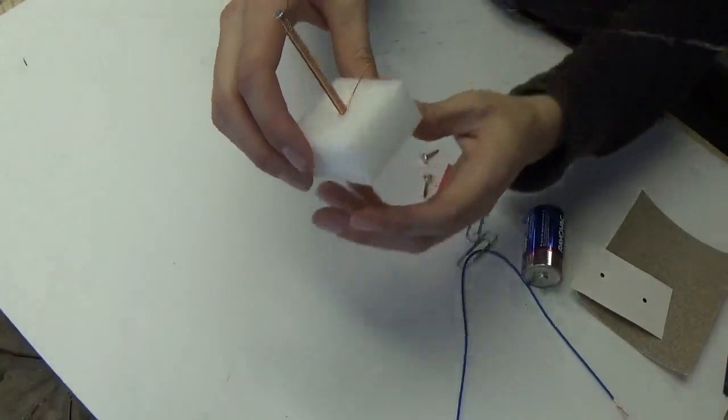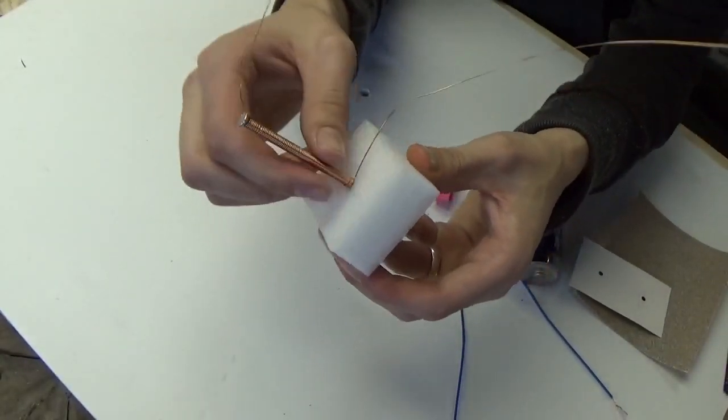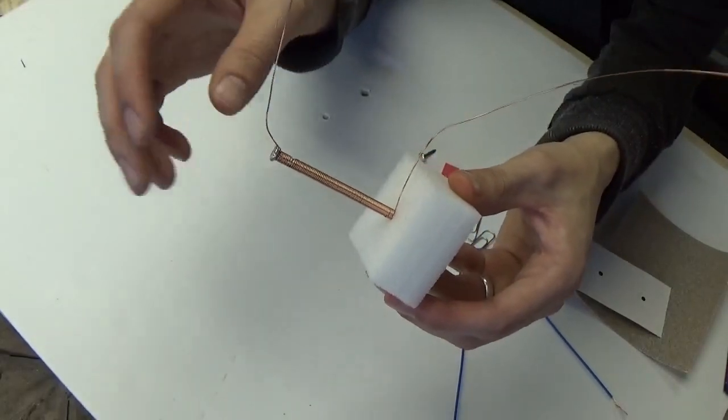First you want to take the nail and take the wire and wrap it around the nail about a hundred times, about nine to a hundred times.